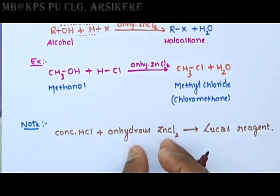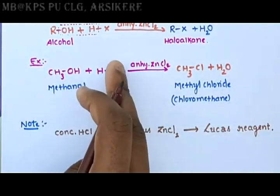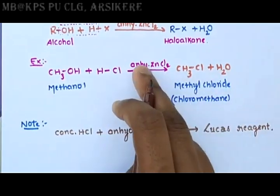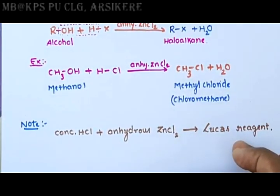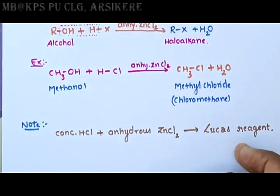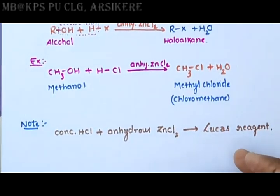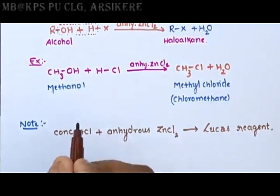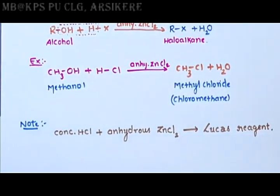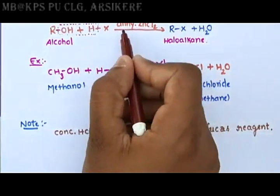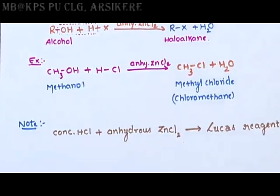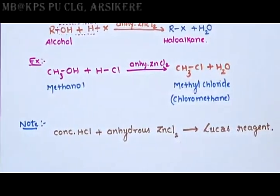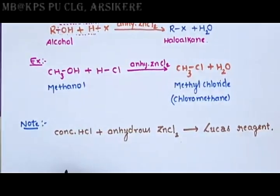The role of anhydrous zinc chloride is to remove the water molecule from the reactants. Tertiary alcohol is more reactive than primary and secondary alcohol. This concludes the first method for the preparation of haloalkanes.